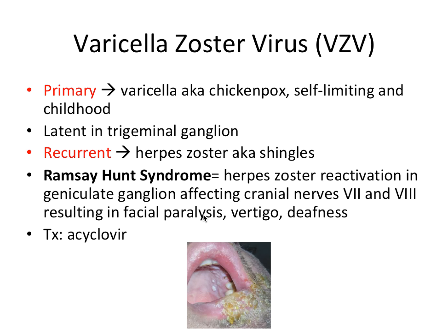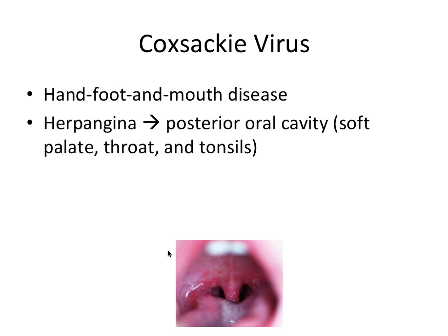Ramsay-Hunt syndrome comes up on a lot of test questions. It's a herpes zoster reactivation in the geniculate ganglion affecting cranial nerves seven and eight. Cranial nerve seven is the facial nerve, which innervates the facial muscles, and cranial nerve eight is the vestibulocochlear nerve, which controls hearing and balance. So facial paralysis, vertigo, and deafness all correlate with the cranial nerves this virus is affecting. Treatment with acyclovir is common.